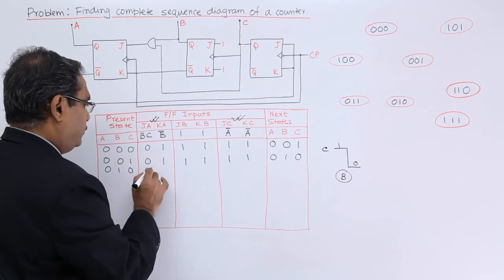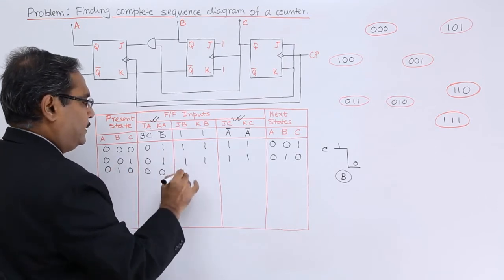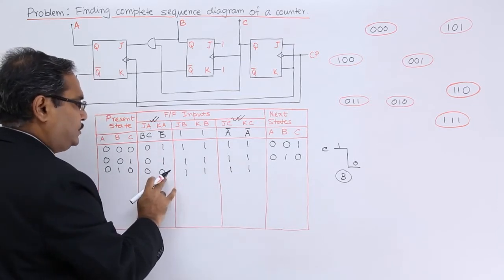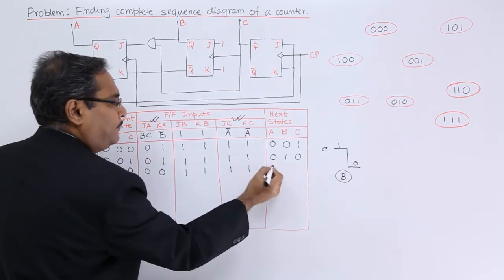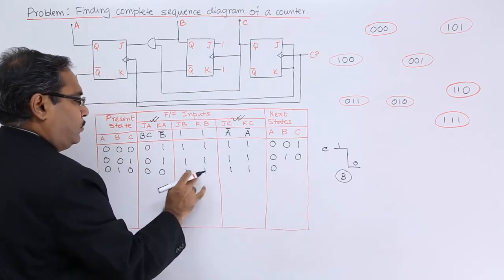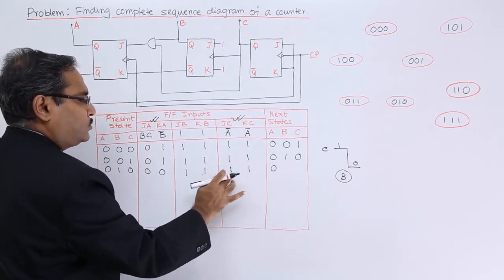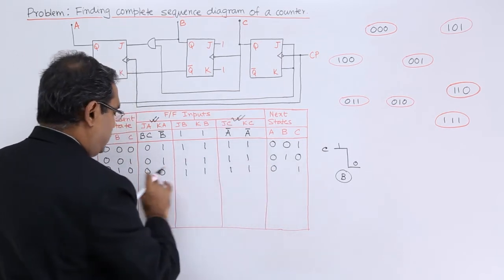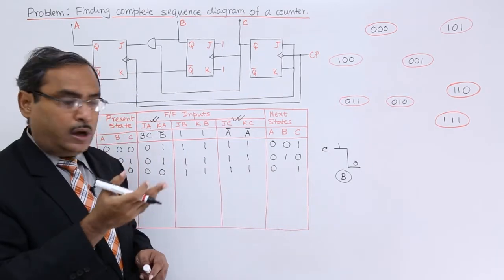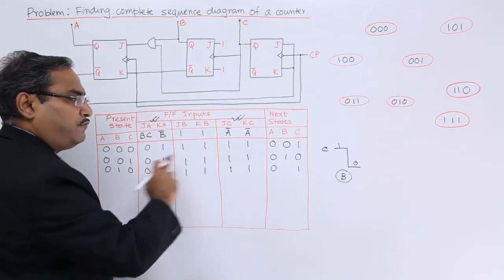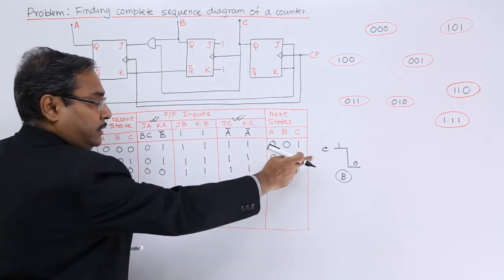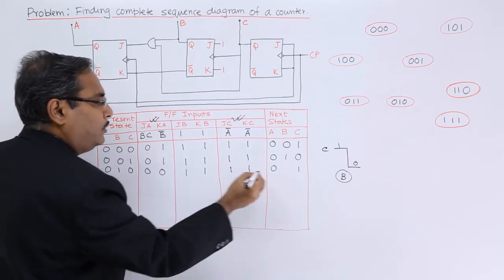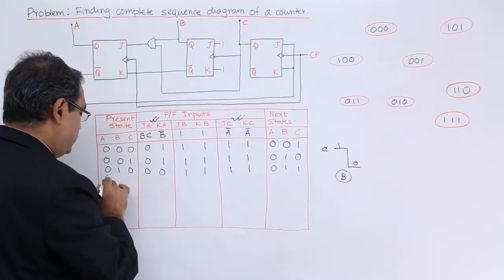Writing the new state: BC is 0, B-bar is 0, and A-bar is 1,1. For 0,0 there is no change so A will remain the same. C has got a transition from 0 to 1, so there is no transition from 1 to 0 for C. That is why B did not get any clock pulse, and the previous output of B will remain the same. So we go for state 0,1,1.